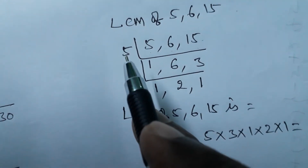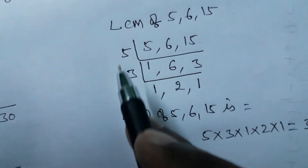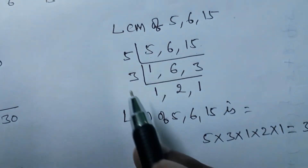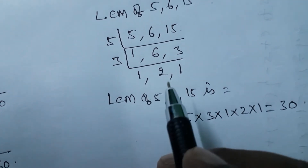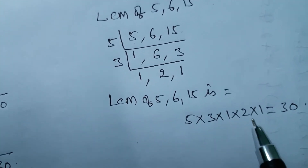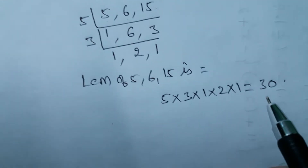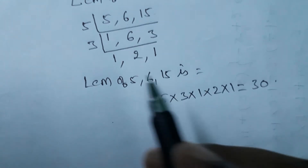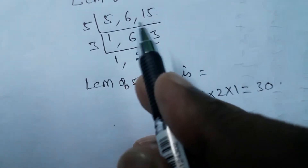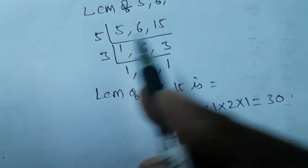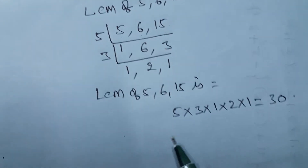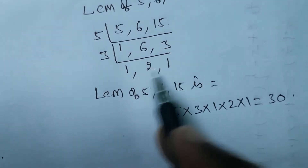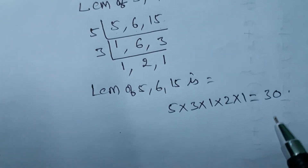Now multiply all the outside numbers — the divisors and the final row — to get the LCM: 5 × 3 × 1 × 2 × 1 = 30. So the LCM of 5, 6, and 15 is 30. Remember: when dividing, take a divisor that works for all if possible, or at least two numbers. Now that we have the LCM, we can convert the fractions.